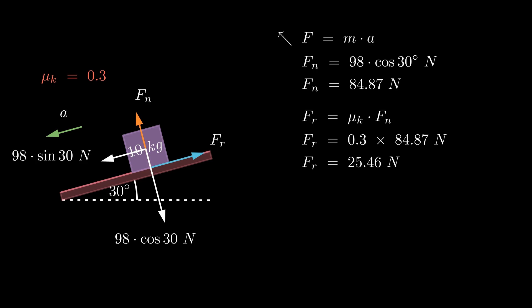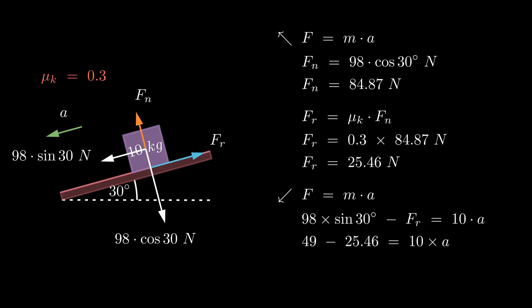With all the necessary information, we can now apply Newton's second law in the direction of motion to determine the acceleration of the object. Upon solving this equation, we find that the acceleration of the object is 2.35 meters per second squared.